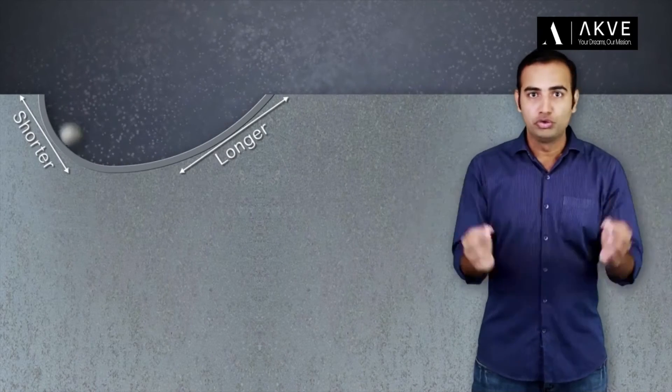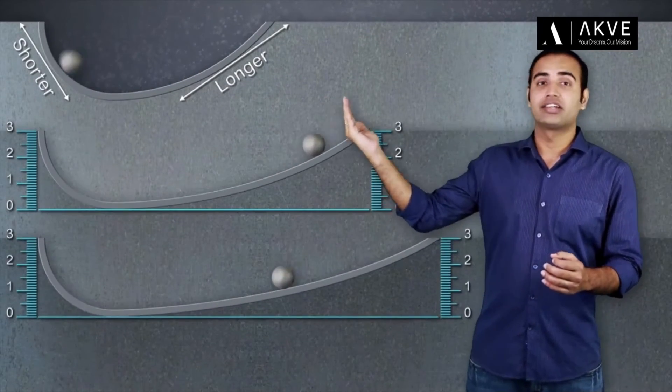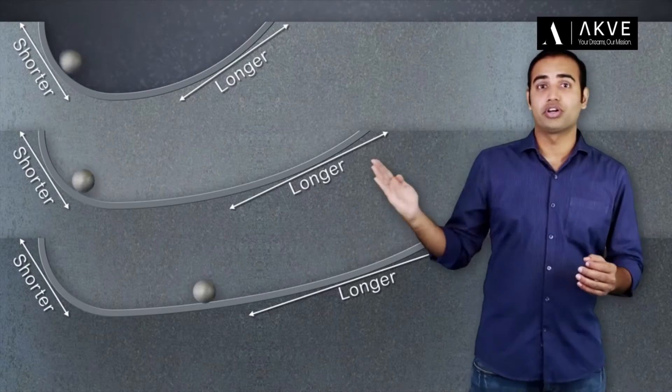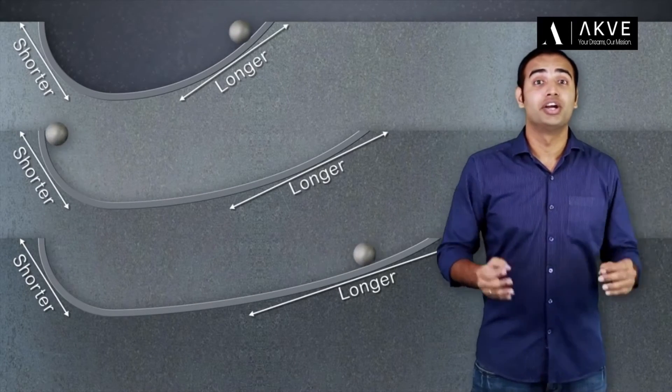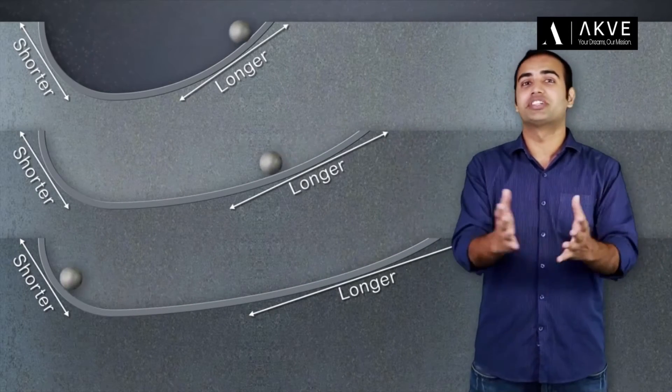That was cool. So he went on tilting the right side more and more towards the horizontal. Each time he observed that ball traveled longer and longer distances to attain the same height on the opposite side.